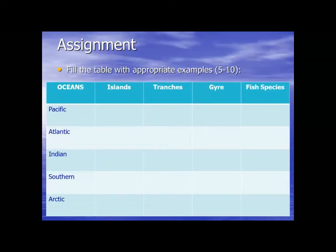Today we have talked about world oceans. We have five world oceans: Pacific, Atlantic, Indian, Southern and Arctic. Pacific Ocean has the greatest depth and is the largest ocean. Atlantic is the second largest. Indian Ocean is the third largest. Southern Ocean is the fourth largest. And Arctic Ocean is the smallest ocean.